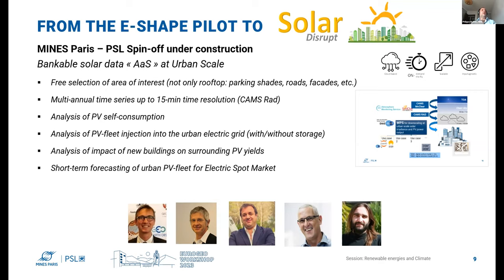Solar Disrupt offers free selection of the area of interest — not only rooftops but also parking spaces, roads, and vertical façades. It provides multi-annual time series up to 15-minute time resolution. Features include analysis of PV self-consumption by comparing the time series against energy consumption, and analysis of PV fleet injection into urban electric grids — since historical time series data allow examining congestion occurrence and defining the grid capacity needed to accept PV outputs.